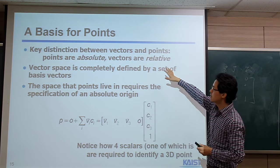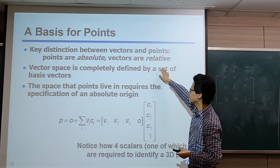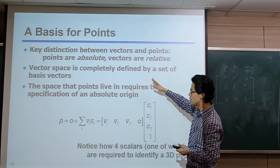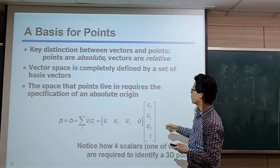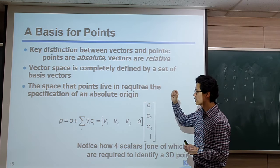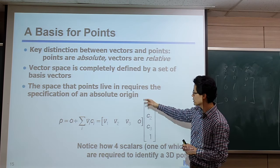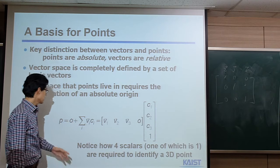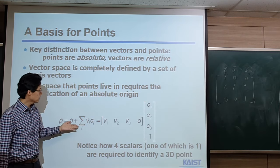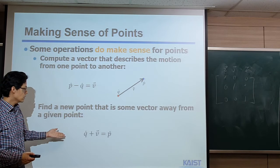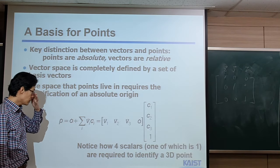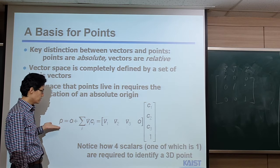Again, the main key distinction between vector and point is that points are absolute while vectors are relative. We know that vector space is completely defined by a set of base vectors. On the other hand, the space that points live in requires an absolute origin. That's why we need to introduce that absolute point — we call it the origin. As a result, to define an arbitrary point p, we need to introduce origin o plus the weighted sum of basis vectors. And since adding a vector to a point gives a new point, the same machinery applies.